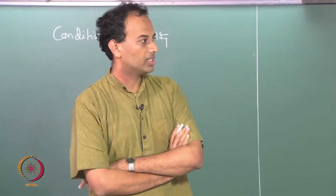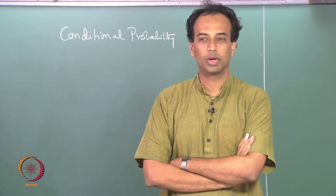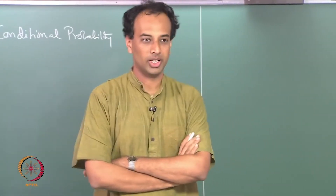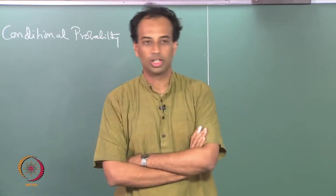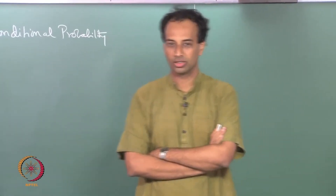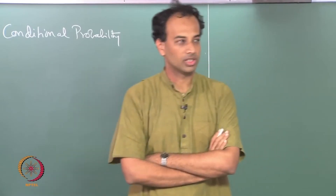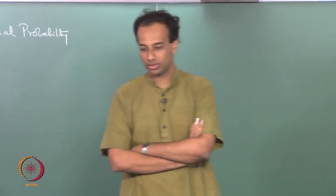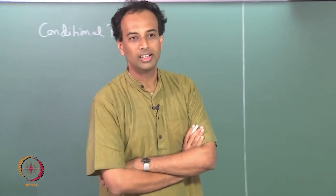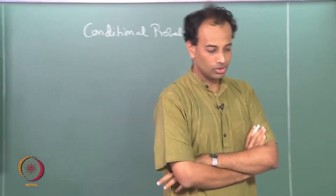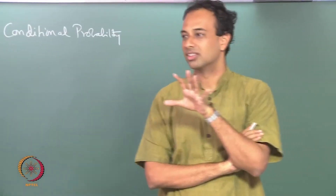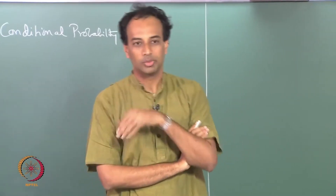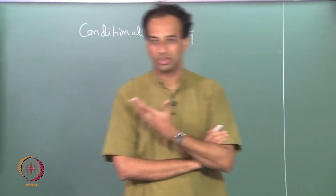It turned out that when omega is countable, it is possible to assign probability measures to all subsets of omega. Whereas when omega is uncountable, such as the [0,1] interval or the infinite coin toss model, we had to settle for a smaller sigma algebra and assign probabilities to that. So far we have completed that section on what probability spaces are and how probability measures are assigned to a measurable space.